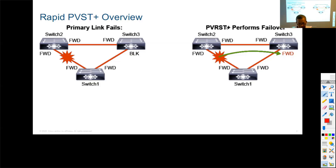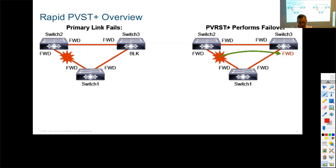For the Nexus, Rapid Per-VLAN Spanning Tree is on by default on the latest releases. On earlier Nexus releases, Per-VLAN Spanning Tree may be the default instead. You need to check which version your switch is running. Some other vendors still have IOS-based switches where Rapid may not be the default.